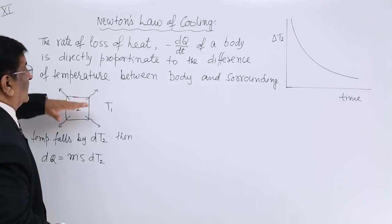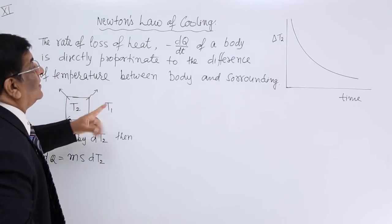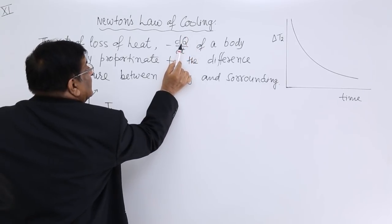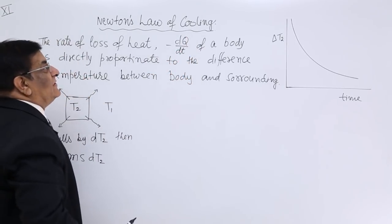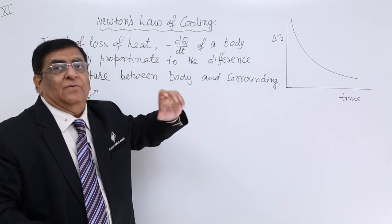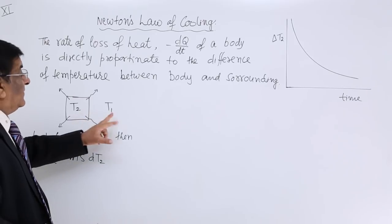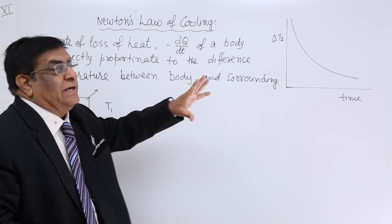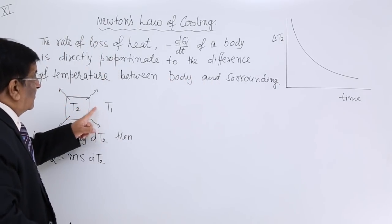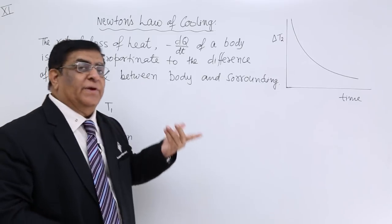This temperature will start falling down. The quantity of heat radiated out per second is given by DQ by DT, the rate of heat per unit time, known as the rate of loss of heat. This depends upon the temperature difference — if the body is very hot and surroundings very cold, heat radiated out will be very large; if the temperature difference is small, heat radiated will also be very small.